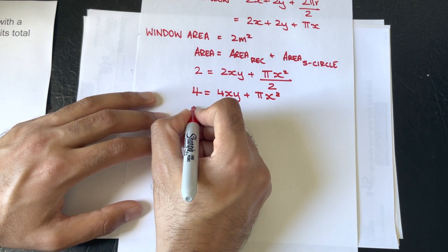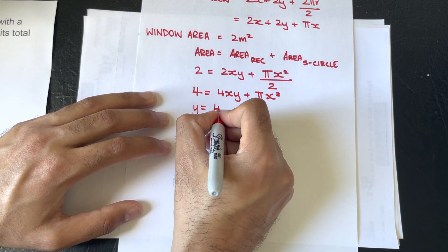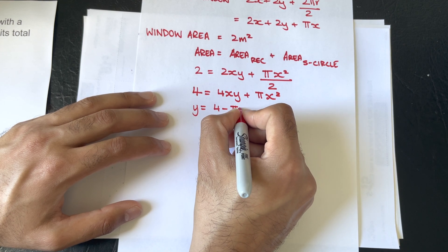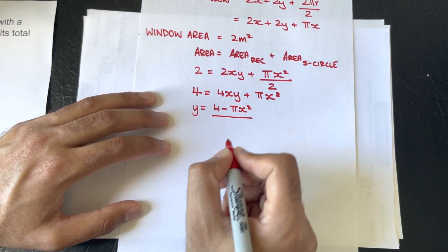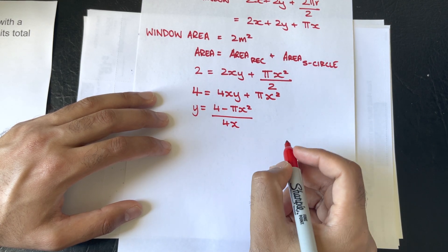Okay, and we're going to solve for y. Y will equal 4 minus πx squared, that is divided by 4x.